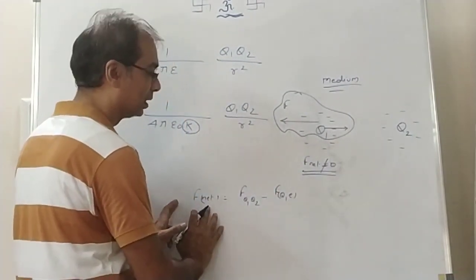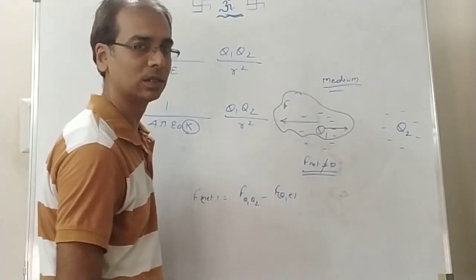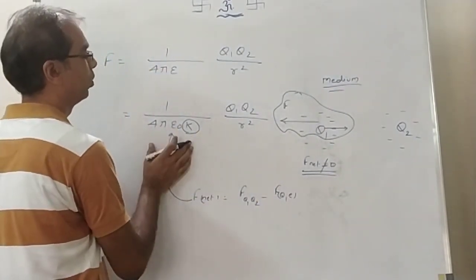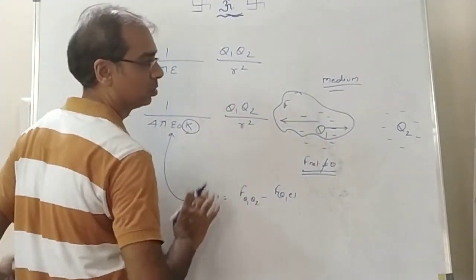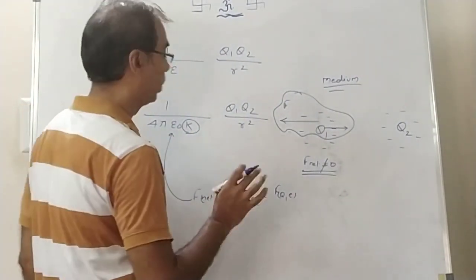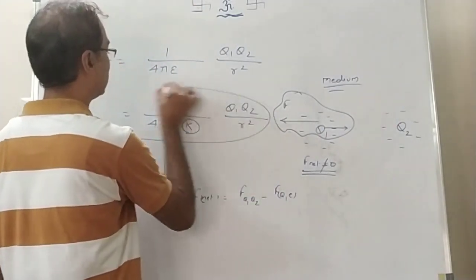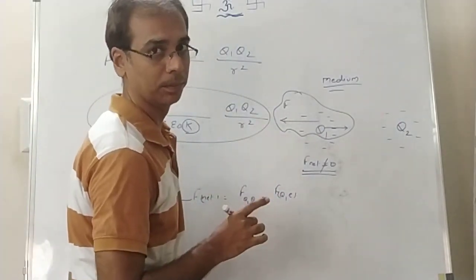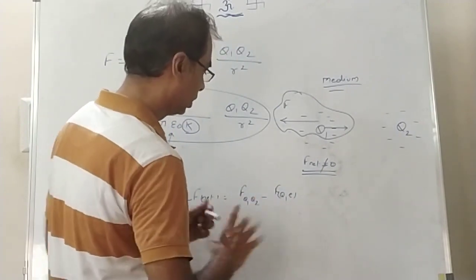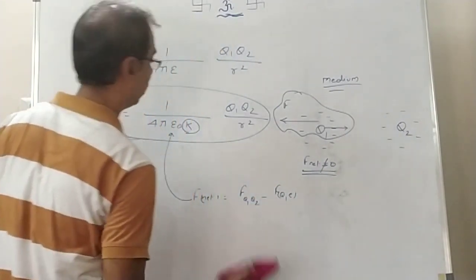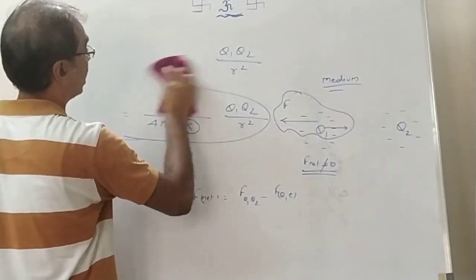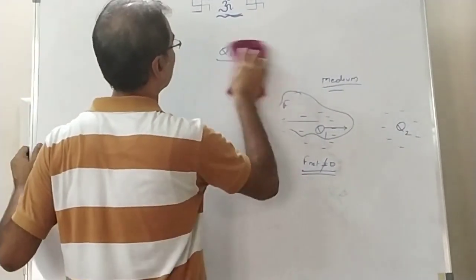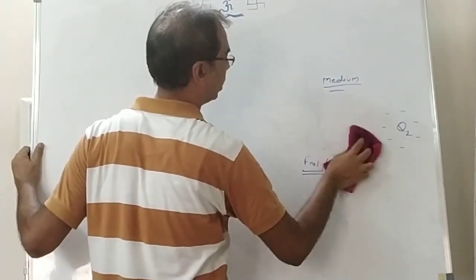Because of this polarization effect, the net force gets decreased. That is why the force in a medium is written as 1 by 4 pi epsilon-naught k times q1 q2 by r squared. This is the theory behind why force decreases when charges are placed in a medium.